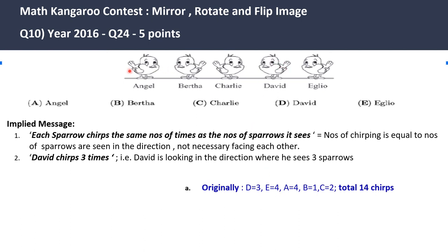Eagle chirps four times. He has four birds in his direction. One, two, three, and four. Angel also chirps four times because she is looking at the right direction. She is at the far end of this chain and she sees all four of them: Bertha, Charlie, David, Eagle.